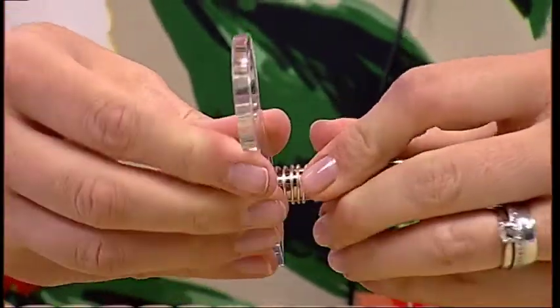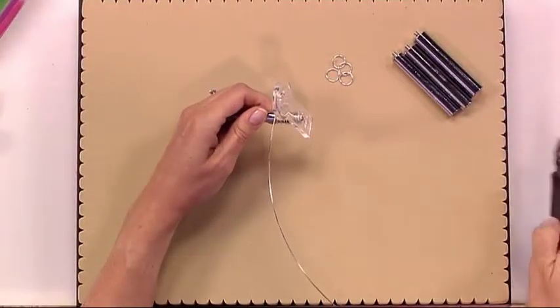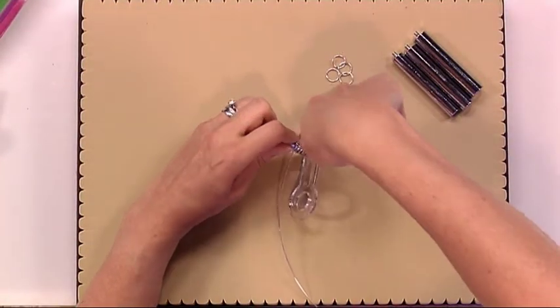And then using a pair of flush cutters, cut it away from the perspex key.